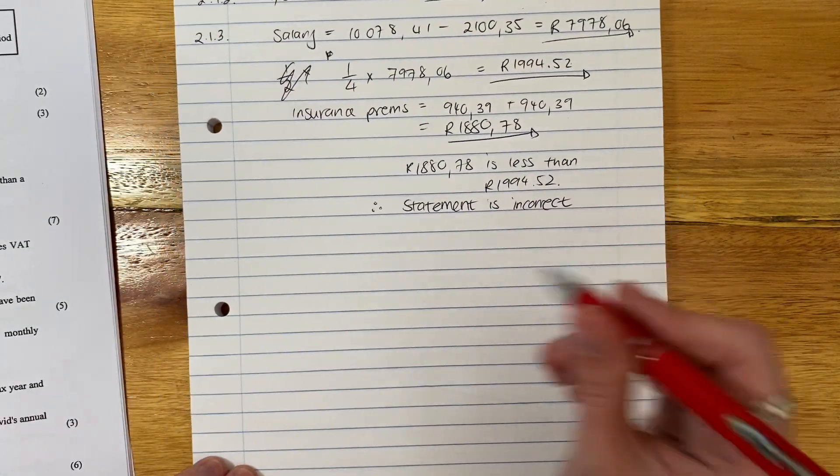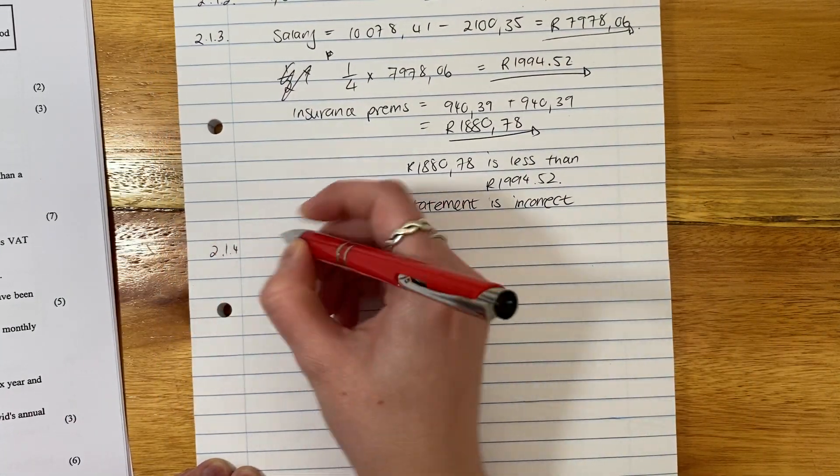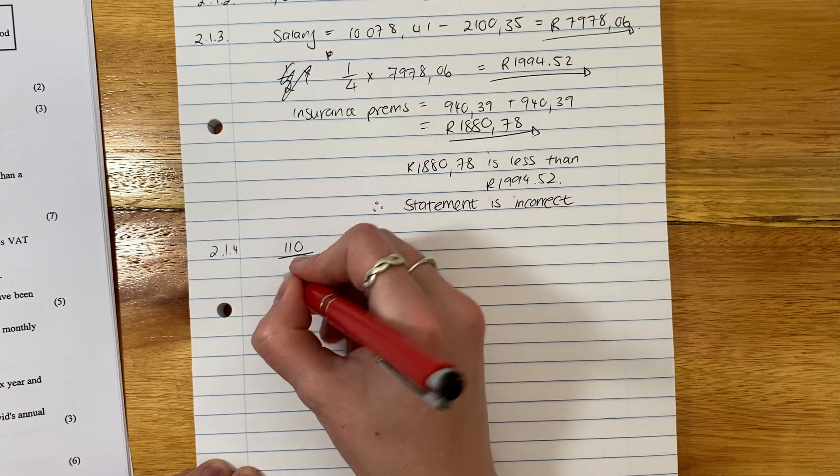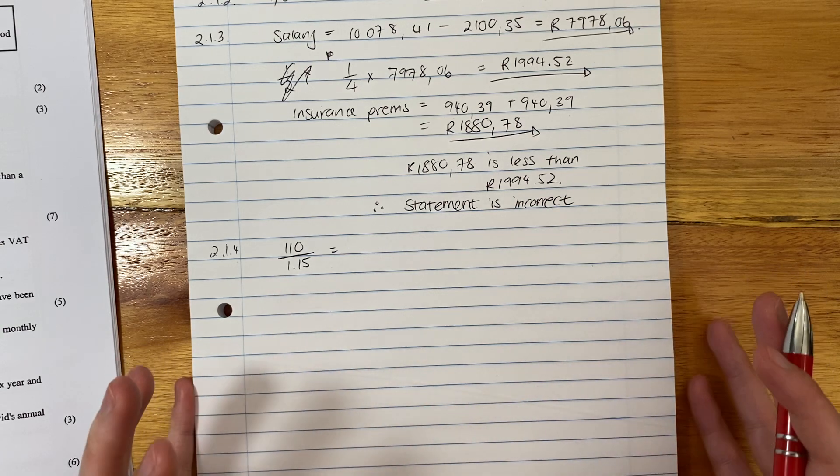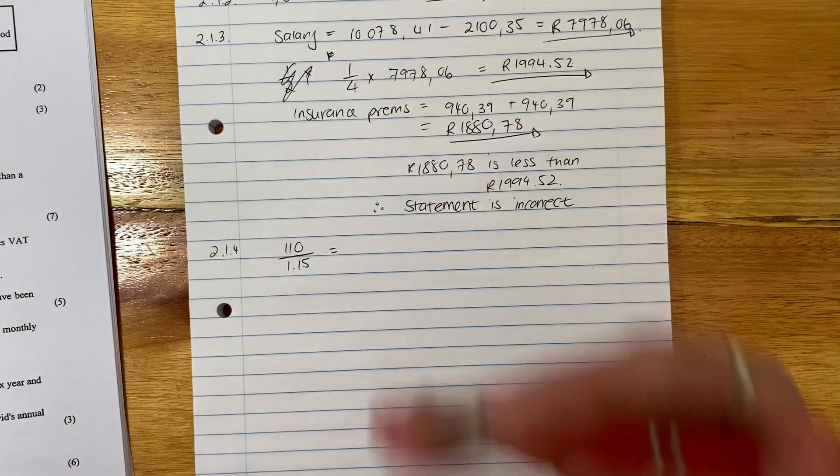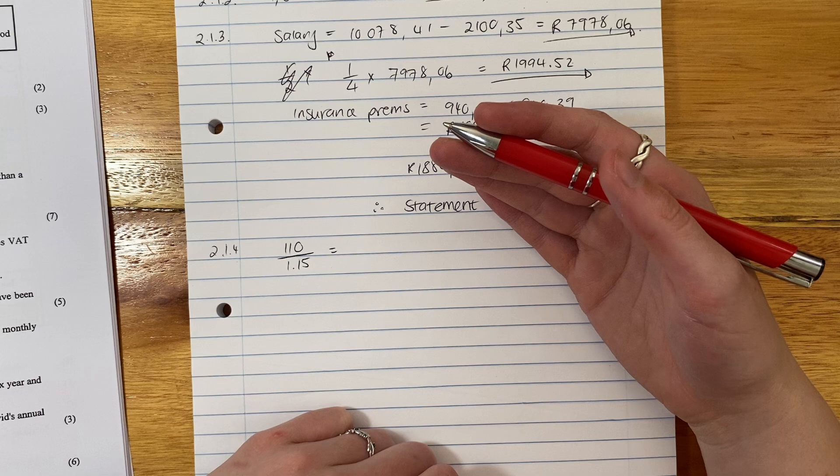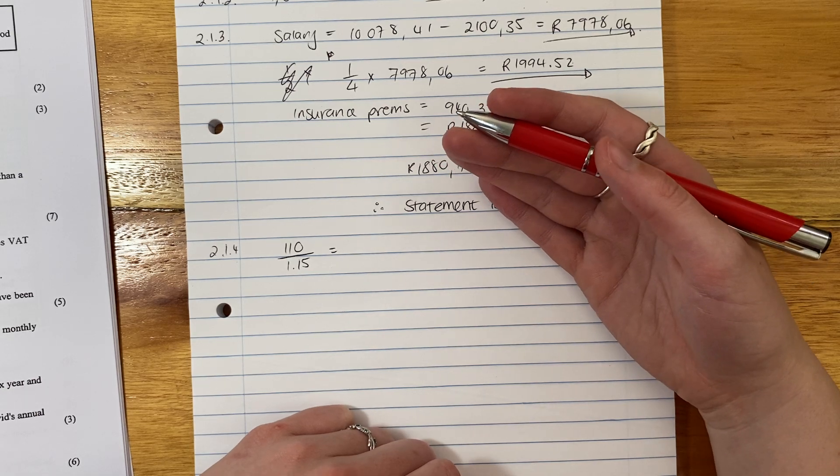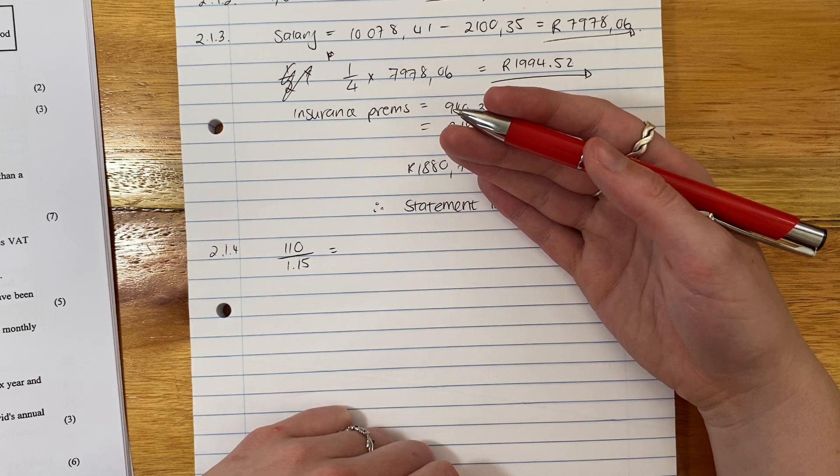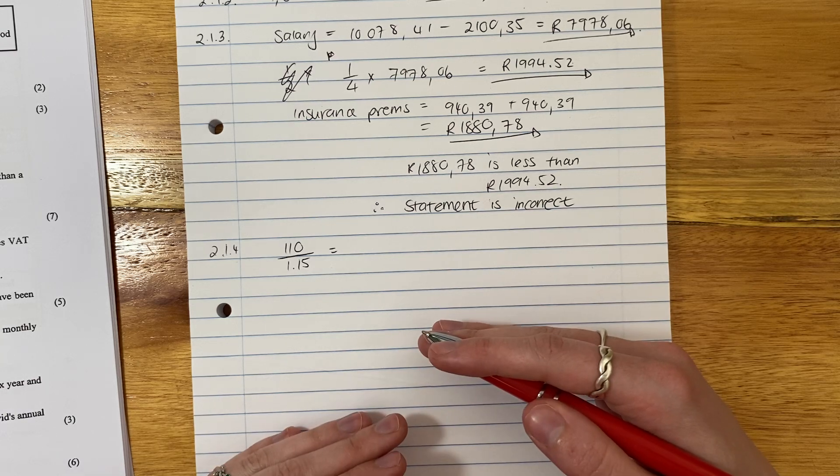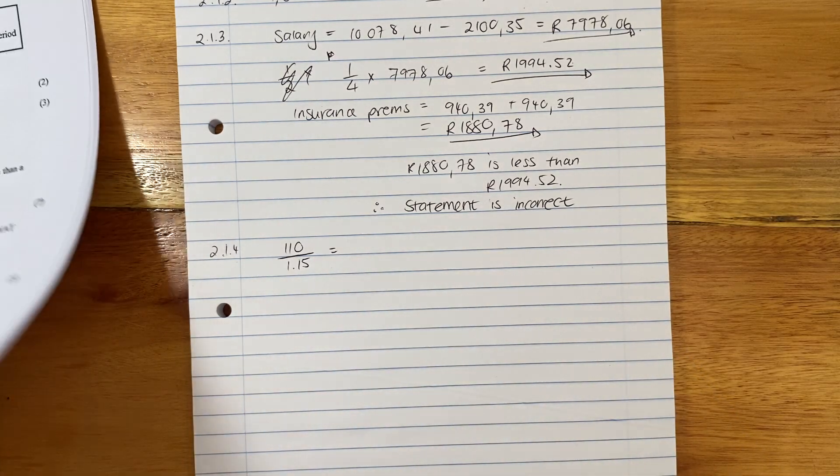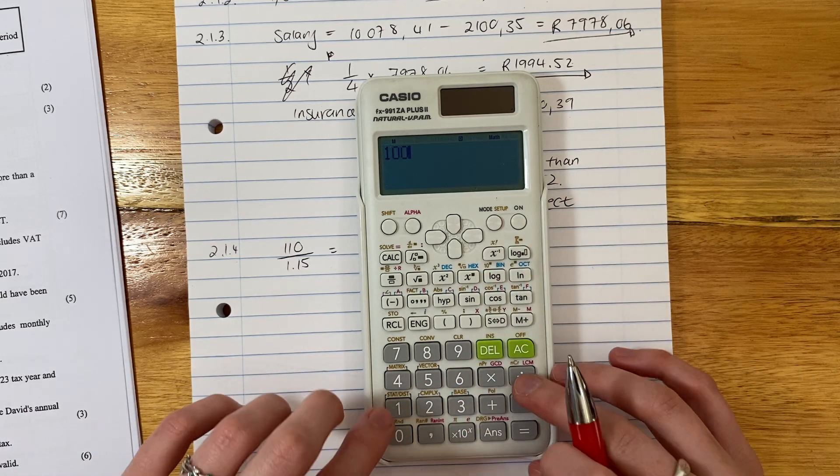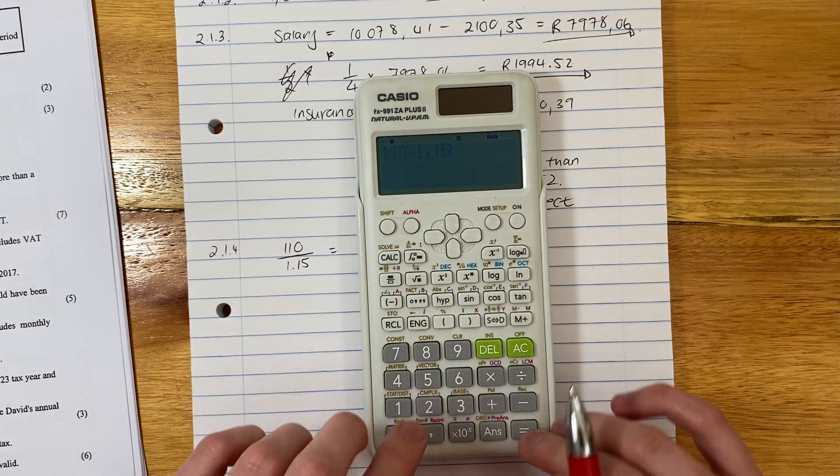So we're going to say 2.1.4: 110 divided by 1.15. Now, students always get confused by this. When I'm adding on VAT, I multiply by 1.15. It just means you increase it by 15%. When I want to take VAT away, what's the opposite of multiply? Divide. And so as simple as that. So you say 110 divided by 1.15.